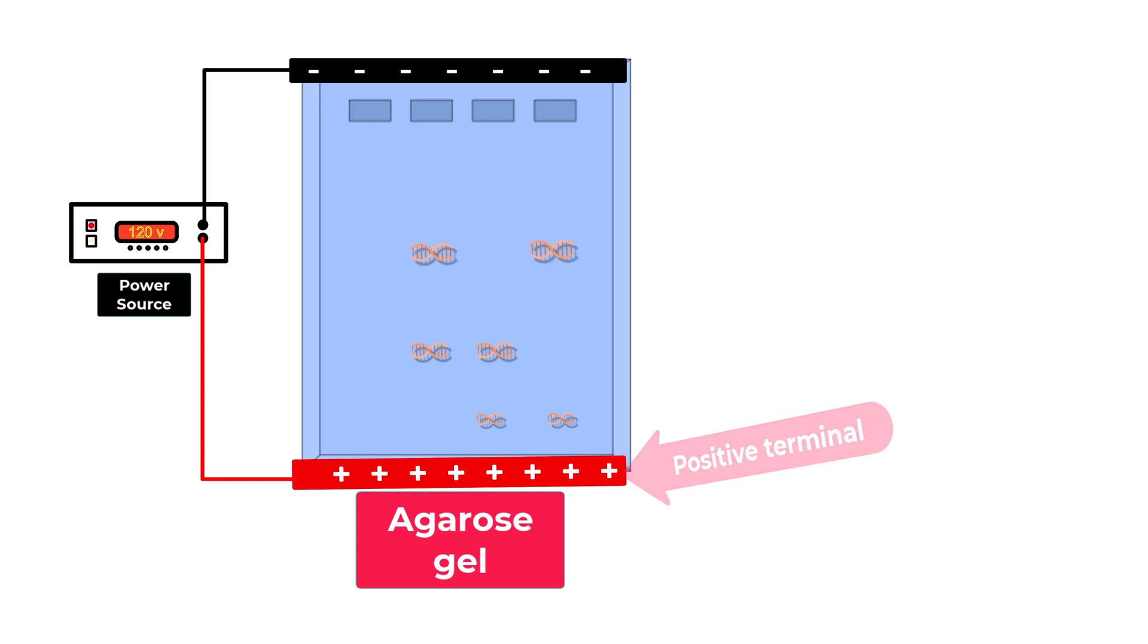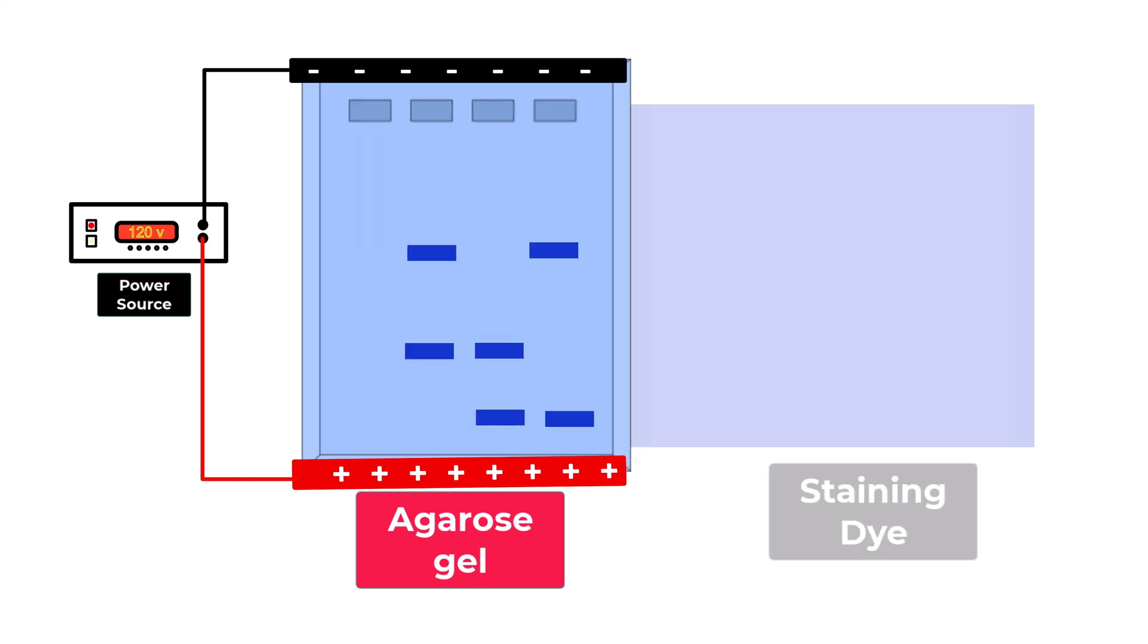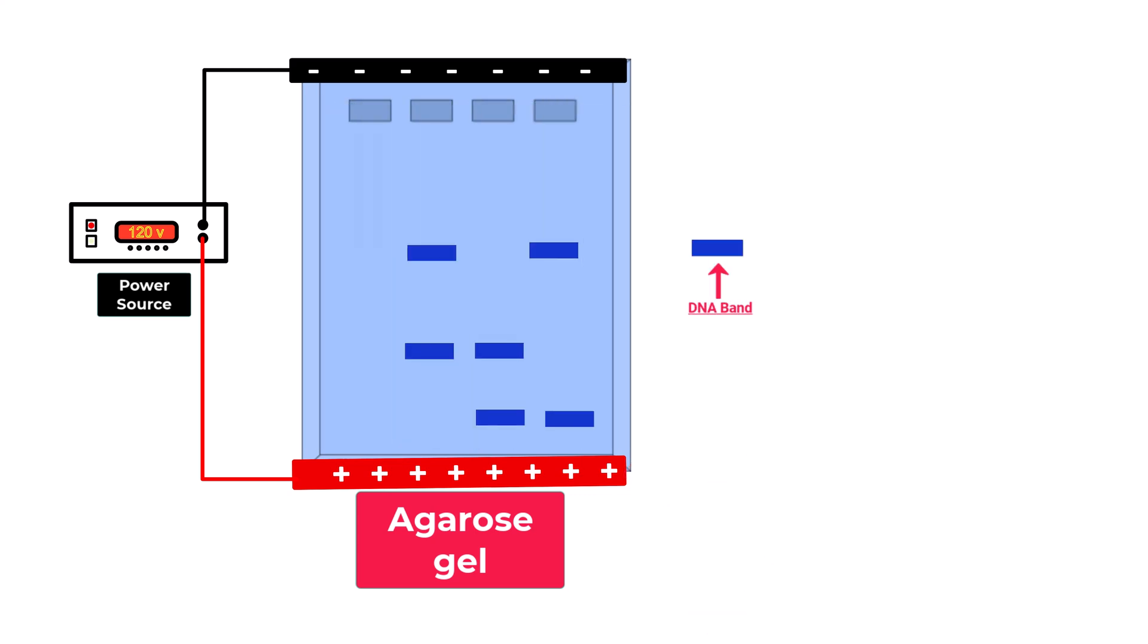To check out the results, we have to stain the gel. After staining, different bands appear at different spots on the gel, and we can clearly see the results.